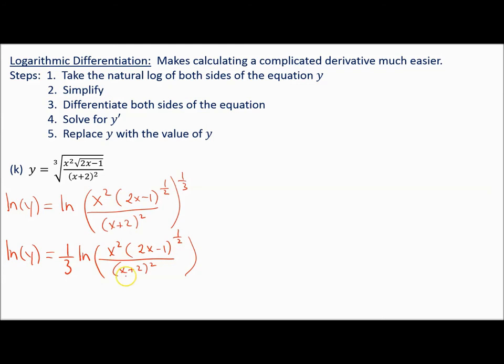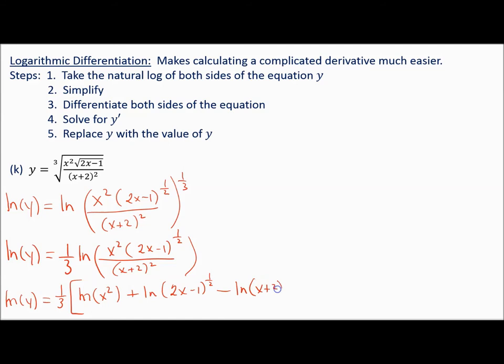I can expand all of this. A product becomes addition of two separate logarithms, and a quotient becomes subtraction. So: natural log of y equals 1 third times bracket: natural log of x squared plus natural log of 2x minus 1 to the 1 half, minus natural log of x plus 2 squared.